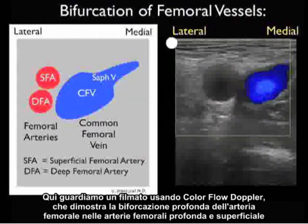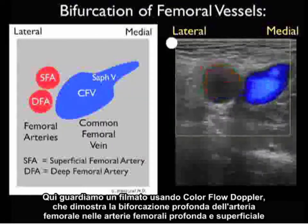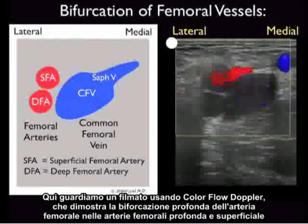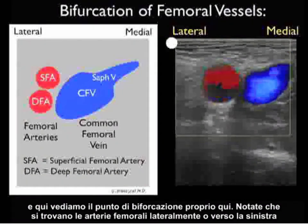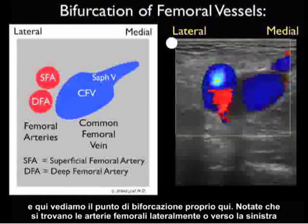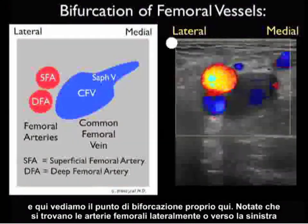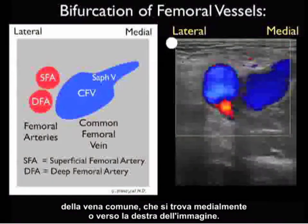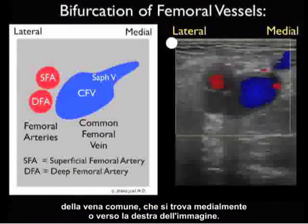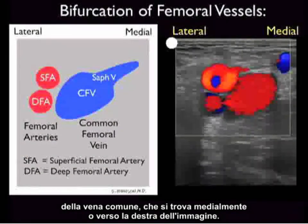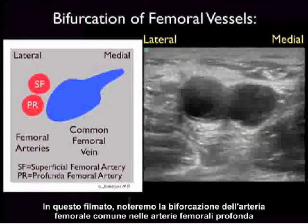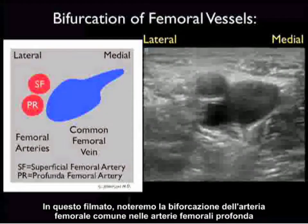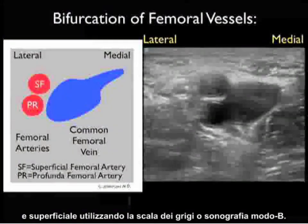Here we see a video clip using color flow Doppler demonstrating the bifurcation of the femoral artery into the superficial and deep femoral arteries, with that bifurcation point visible here. Notice that the femoral arteries are located laterally or towards the left of the common femoral vein, which we see located medially or towards the right of the image.